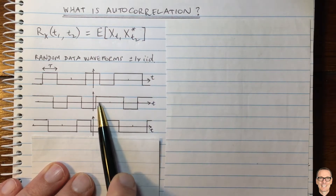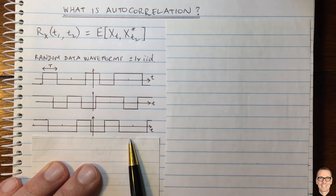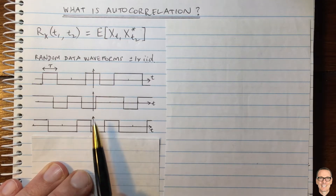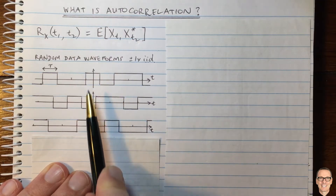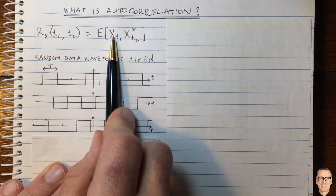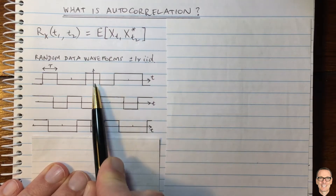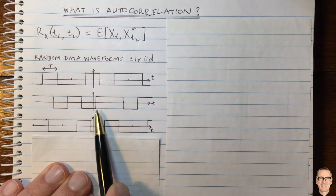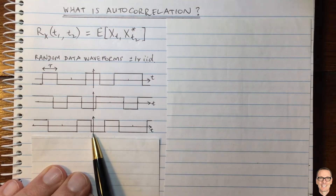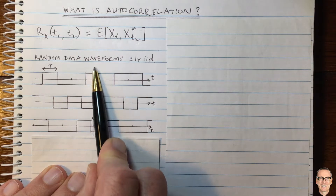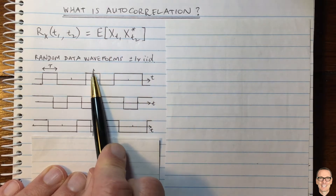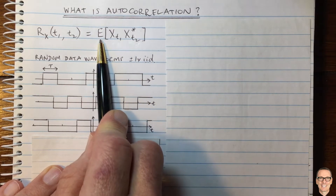How do we calculate this? Let's first consider the simple case where T1 equals T2 equals zero. We've got to take the expected value, meaning the average over all the different possible waveforms. In the first example at time zero, it's plus one. In the second, it's minus one times minus one, which gives plus one. In the third, also minus one times minus one, giving plus one. So in all scenarios when T1 equals T2 equals zero, you get plus one, and the expected value is plus one.